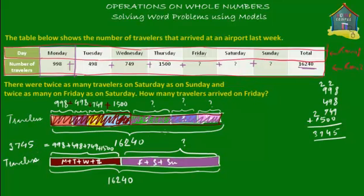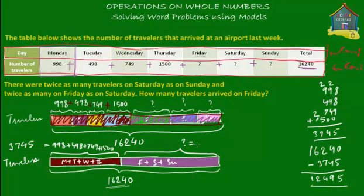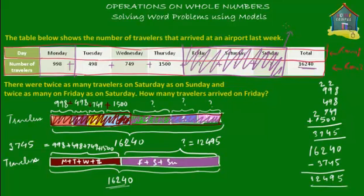Now we can find the purple part — just subtract 3745 from the total of 16,240. So 16,240 minus 3745 equals 12,495. So the number of travellers who arrived on Friday, Saturday and Sunday together is 12,495. These three question marks for Friday, Saturday and Sunday are together equal to 12,495.